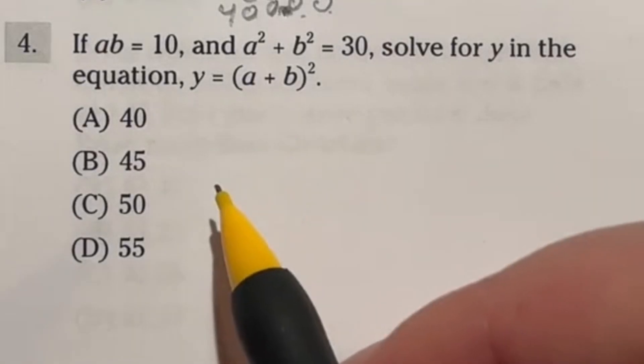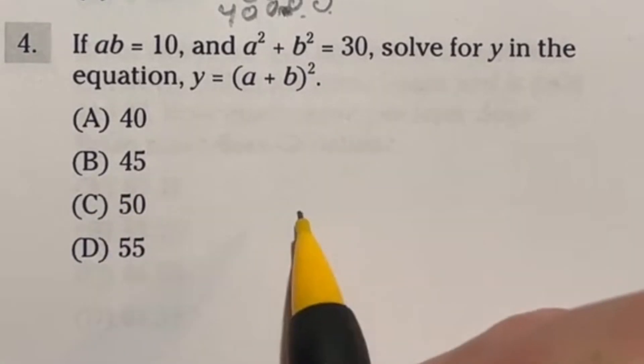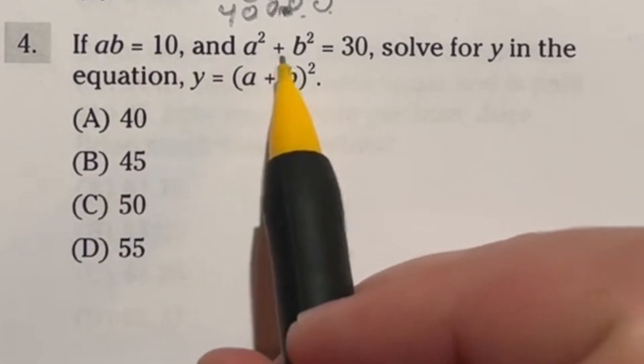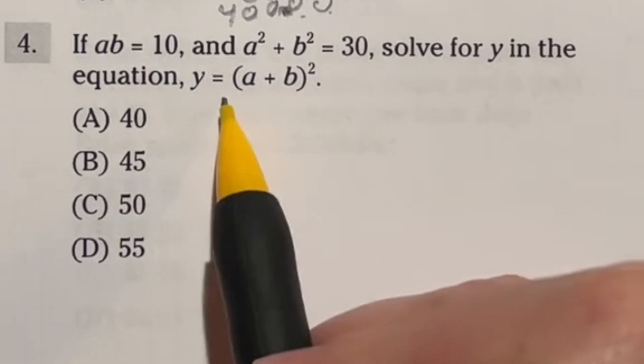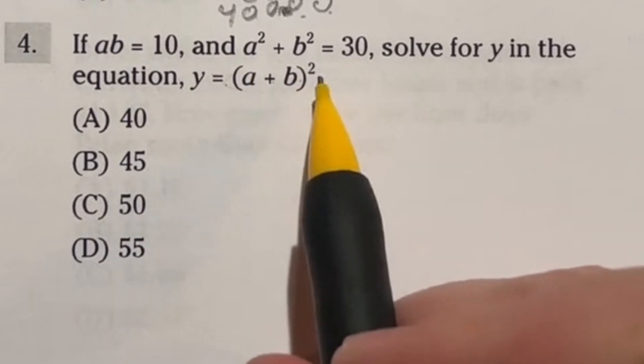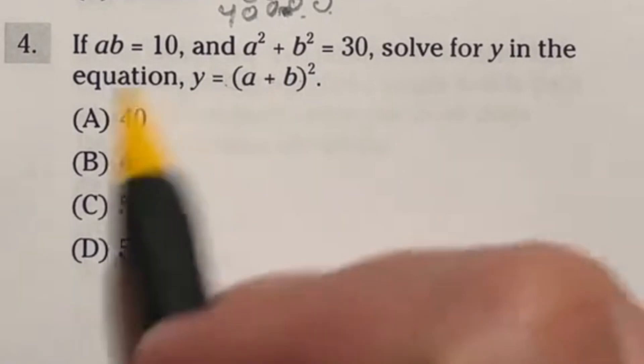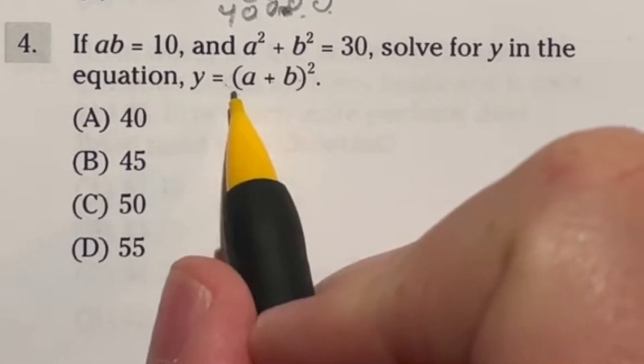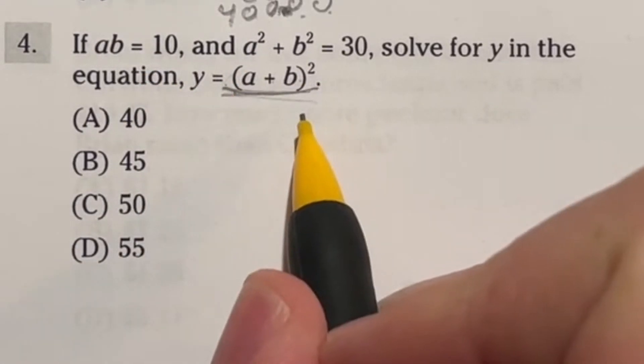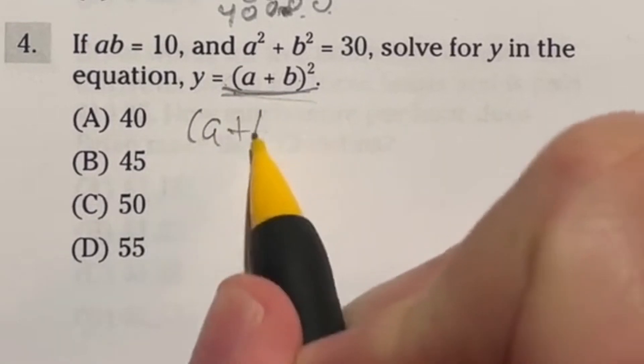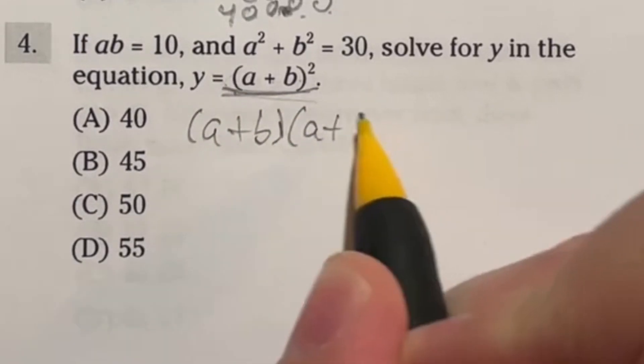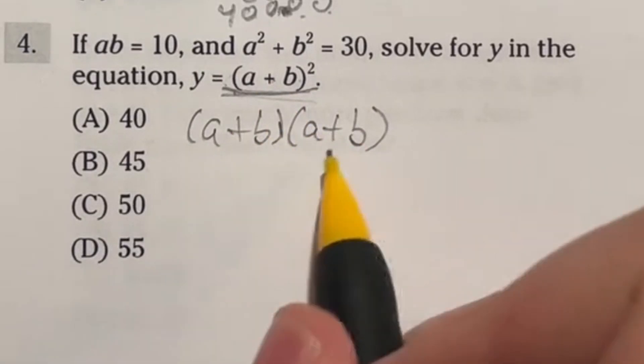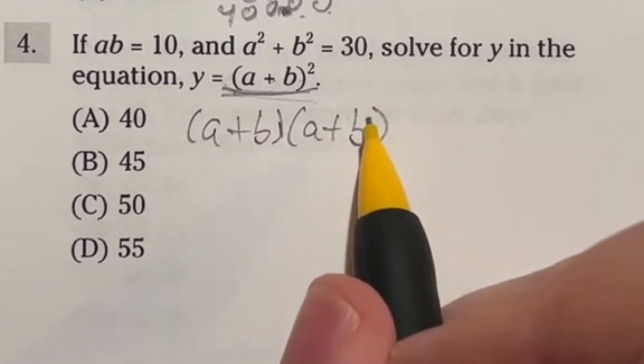So number four is a much more of like a math nerd type question than most of the ASVAB questions are. In this case it says if AB is equal to 10 and A squared plus B squared is equal to 30. Solve for y in the equation y equals A plus B quantity squared. So what the heck is this doing? Well what they're trying to see if you know is not just guessing checking your way through this but do you know what this would be expanded out? Well in order to do this we're actually doing A plus B times A plus B. That's what it means to square something you multiply by itself. Well because of this distribution rule you have to make sure you FOIL this out. What do I mean by FOIL? I mean multiply the first numbers first so A times A would give us A squared.